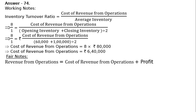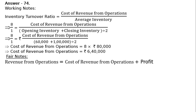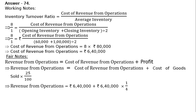Revenue from operations equals cost of revenue from operations plus gross profit, which is 25% above cost. That implies revenue from operations equals cost of revenue from operations plus cost of goods sold into 25%.